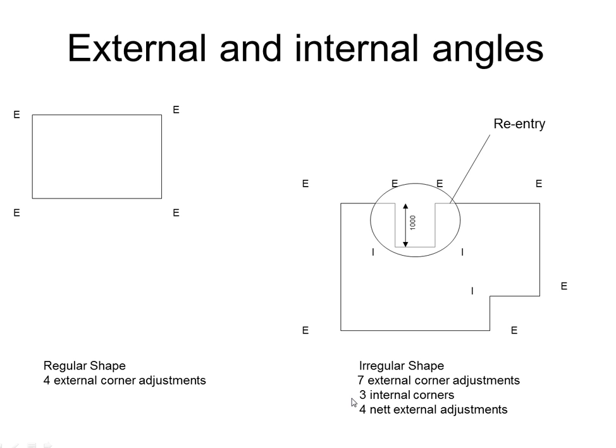Irrespective of whether it was seven, six, nine, or otherwise, you'd find that the internal corners are always cancelled out by the sum of the external corners.